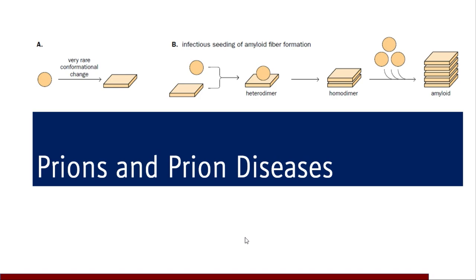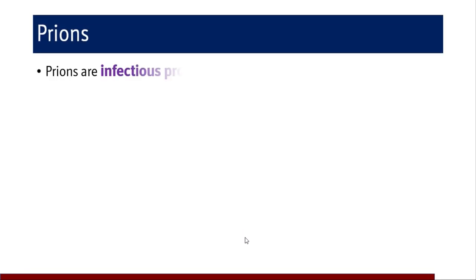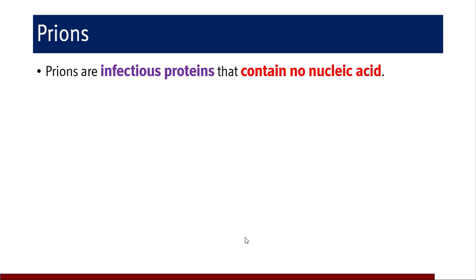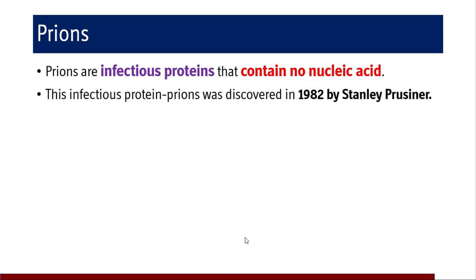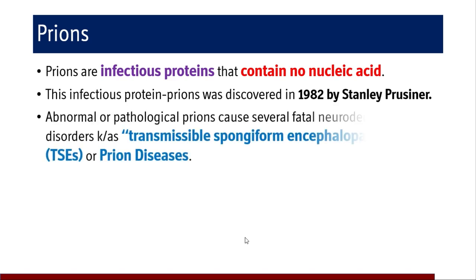Prions are the infectious proteins which contain no nucleic acid. These are not viruses, these are not bacteria — these are just infectious proteins which have no nucleic acid. These infectious proteins, or prions, were discovered by Stanley Prusiner in 1982. These are the abnormal or pathological prions which cause several fatal neurodegenerative disorders, also known as transmissible spongiform encephalopathies. Transmissible means these are infectious spongiform encephalopathies, or prion diseases.